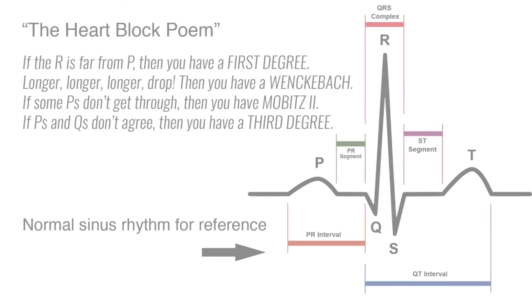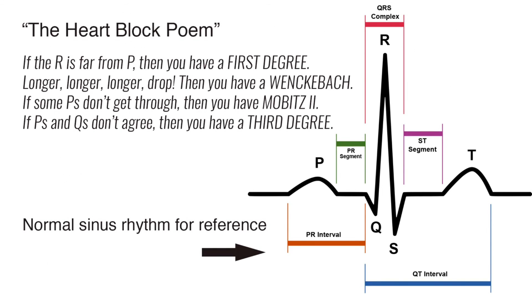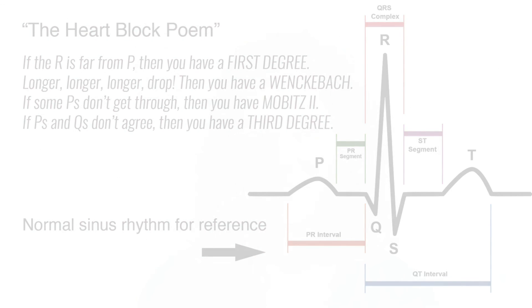Here's a simple poem to help you remember the types of AV heart blocks: 'If the R is far from P, then you have a first degree. Longer, longer, longer, drop — then you have a Wenckebach. If some P's don't get through, then you have Mobitz 2. If P's and Q's don't agree, then you have a third degree.'